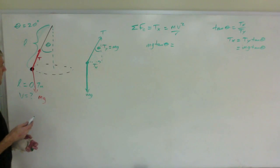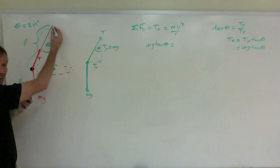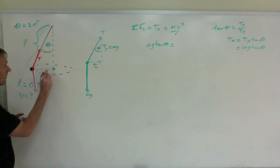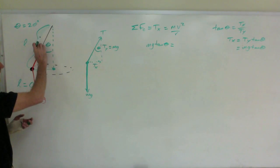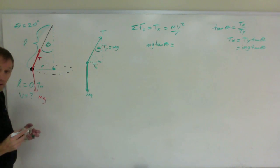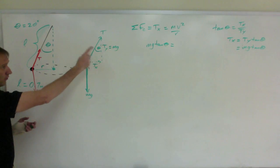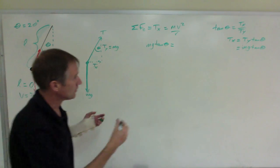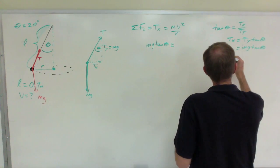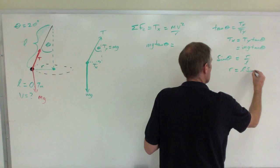R is not the length of the string, because the center of the circle is here — it's going in a horizontal circle around that point, not at the top. So I also need to find that horizontal distance r. The hypotenuse of this triangle is l, the angle is still theta (20 degrees). The sine of that angle is opposite over hypotenuse, so sin θ = r/l, meaning r equals l·sin θ.